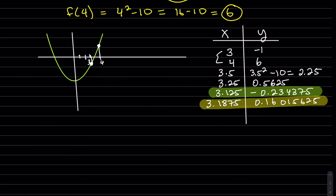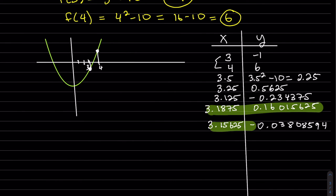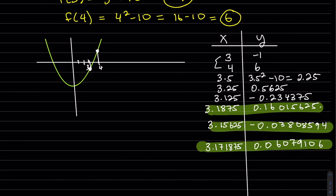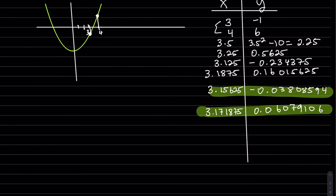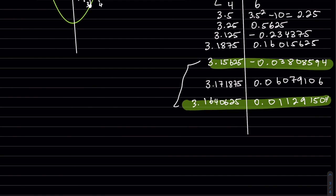We take the average of the pair with opposite signs. We use the positive and the negative, take the average of the x values, and notice the numbers are getting smaller because we're getting closer to the zero — it's working. We keep iterating, using the pair of opposites each time. The decimal values are converging; we see '16' appear twice, meaning to two decimal places the answer has stabilized.